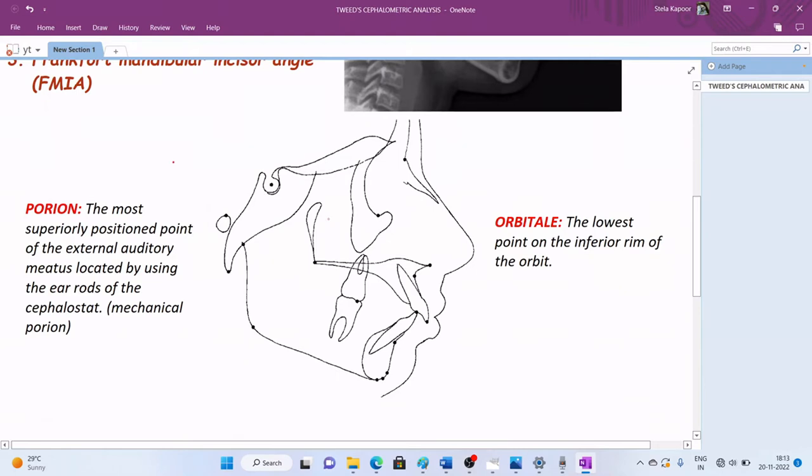Those two points are porion and orbitale. According to Jacobson, porion is the most superiorly positioned point on the external auditory meatus located by using the ear rods of the cephalostat. This is basically the mechanical porion.